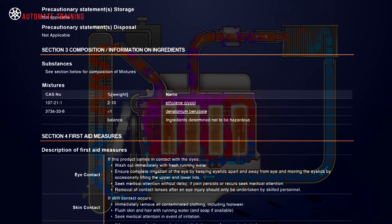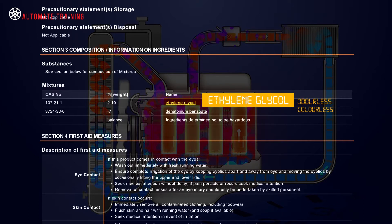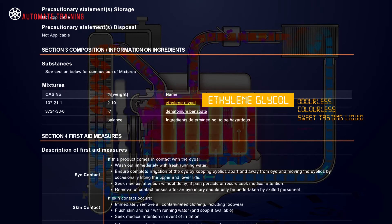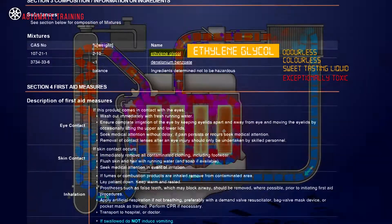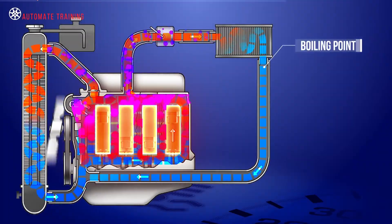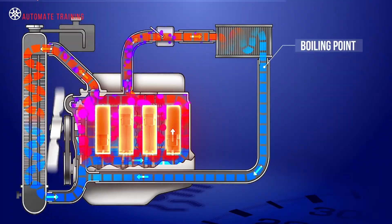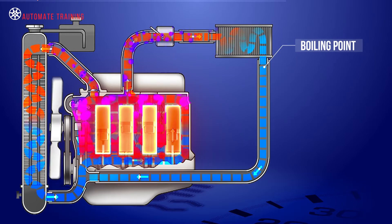The main ingredient utilized in the production of engine coolant is ethylene glycol. This is an odorless, colorless, sweet-tasting liquid and is also exceptionally toxic to human and animal life. Glycol is used to increase the working temperature range of the coolant mixture, raising its boiling point and lowering its freeze point.